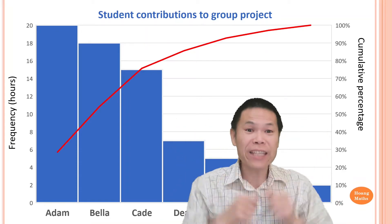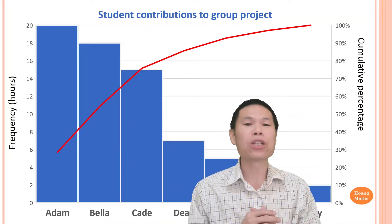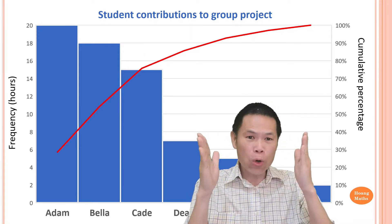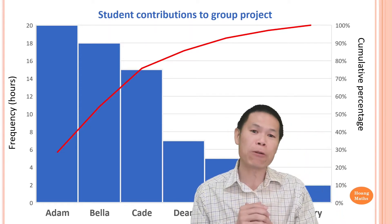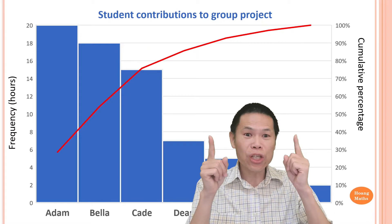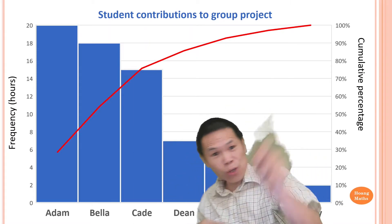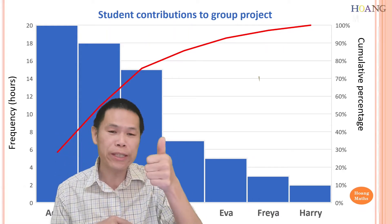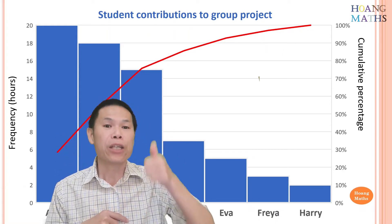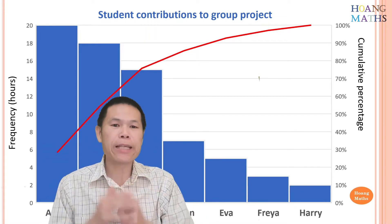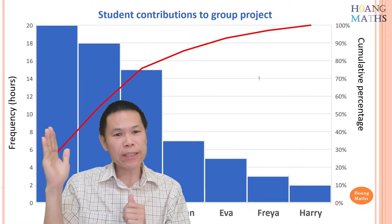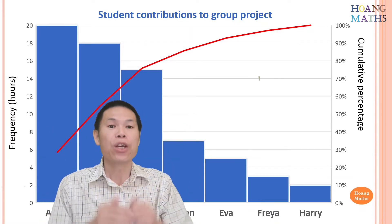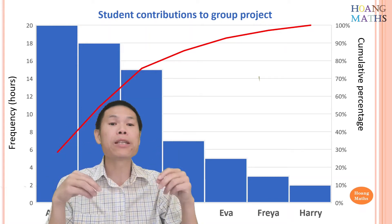Hi there, hope you have a fantastic day today. This lesson I'm going to teach you how to draw and interpret a Pareto chart. There's a PDF file in the description below for you to download so you can work with me. A Pareto chart is a combination of a frequency histogram and a cumulative line graph. On the left-hand side we have frequency and on the right-hand side we have cumulative frequency in terms of percentage.